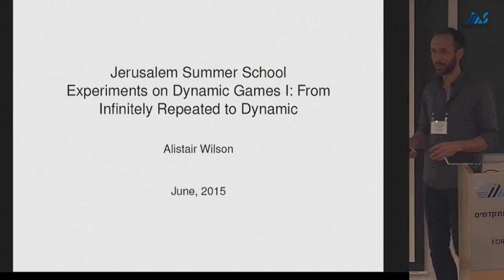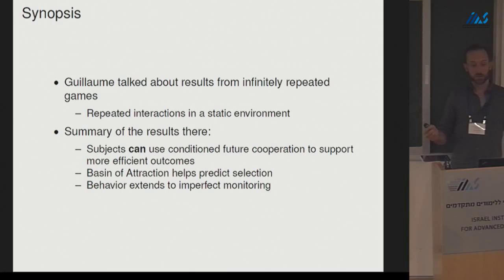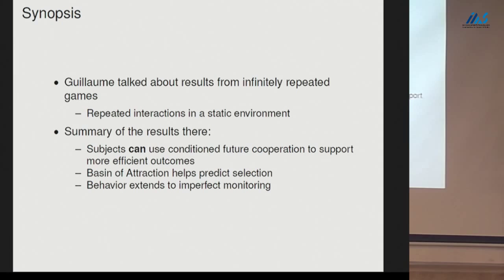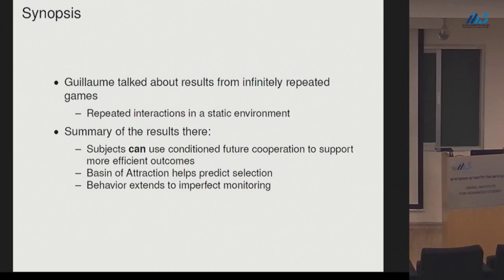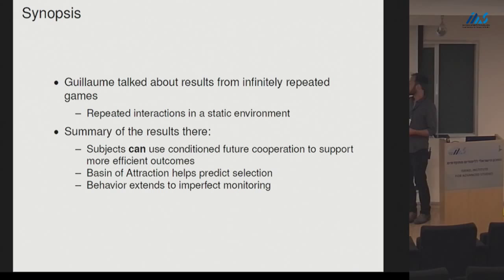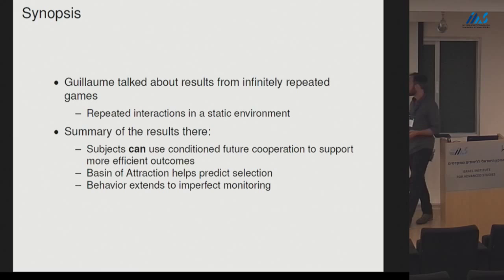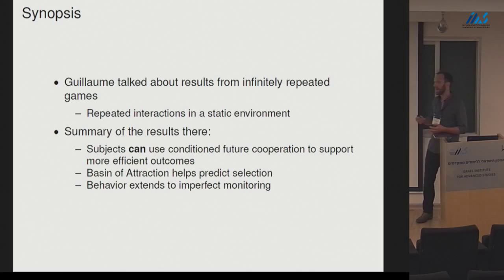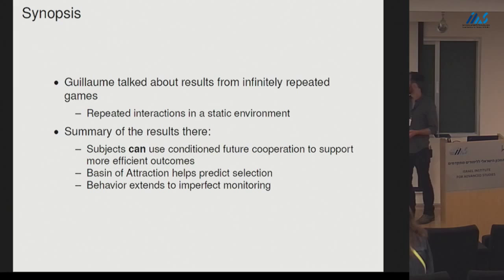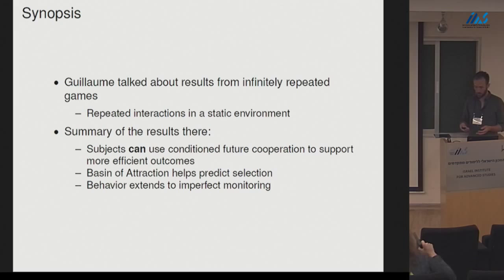Guillaume talked about infinitely repeated games — repeated interactions with a static strategic environment. The summary from his two talks was that subjects can use conditional cooperation: they can condition their future behavior on what happened right now to support more efficient outcomes. The basin of attraction predicts selection in games with perfect monitoring, and this behavior extends somewhat to imperfect monitoring, although the strategies get a little bit more complicated. I'm going to focus on extensions to stochastic games, and my basic questions are going to be very similar to Guillaume's.